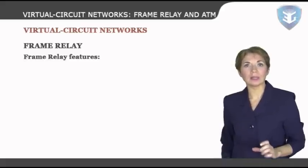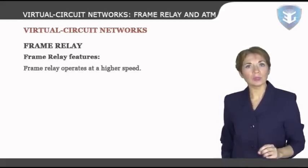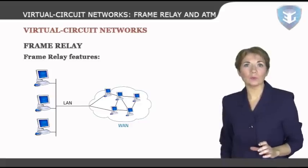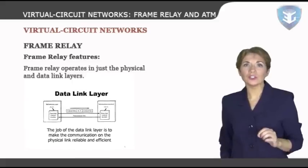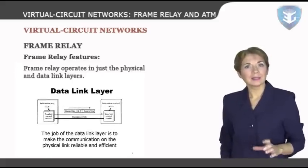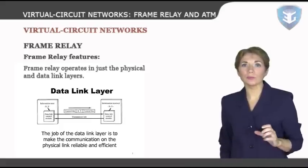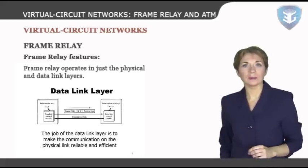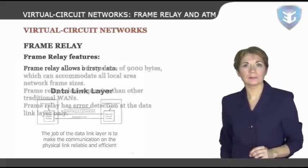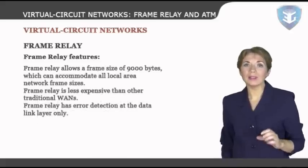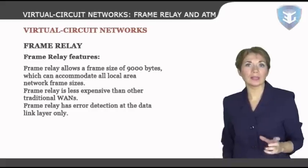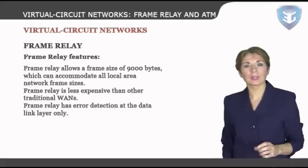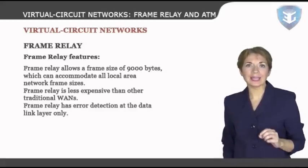Frame relay is a wide area network with several features. Frame relay operates at a higher speed, meaning it can be easily used instead of a mesh of T1 or T3 lines. Frame relay operates in just the physical and data link layers, so it can be used as a backbone network to provide services to protocols that already have a network layer protocol, such as the internet. Frame relay allows bursty data and a frame size of 9000 bytes, which can accommodate all local area network frame sizes. Frame relay is less expensive than other traditional WANs, and has error detection at the data link layer only.